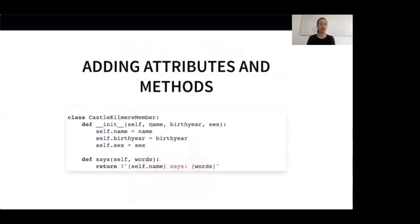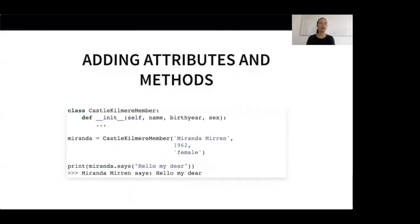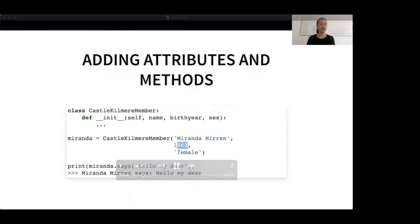Each CastleKilmierMember will have a name, a birth year, and we know whether the member is male or female. This information is included in the __init__ method. If you don't know the word 'dunder', this stands for double underscore and is typically used when talking about methods that start and end with two underscores. The __init__ method is called under the hood whenever you create a new instance of the class. So when creating a new member, for example our headmistress Miranda Mirren, the __init__ method is called automatically with Miranda's name, her birth year and her sex.